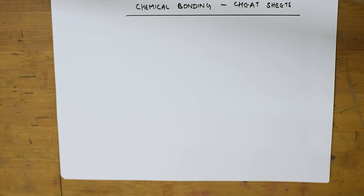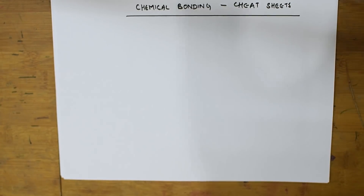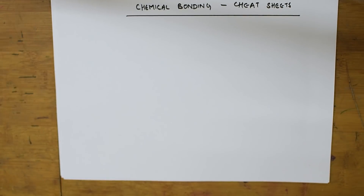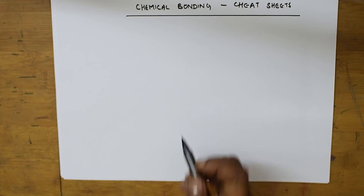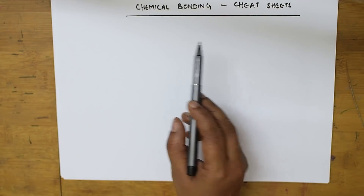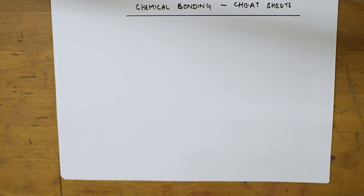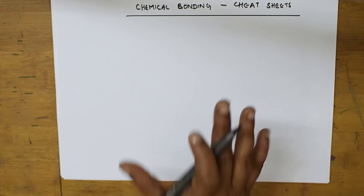Welcome students to one more session of your NEET preparation. We have two more days, and today and tomorrow we'll be studying cheat sheets for different inorganic chapters, because inorganic is something which is very difficult for most students. Today in this video I'll be teaching about chemical bonding cheat sheets, after that P-block elements, then coordination compounds.